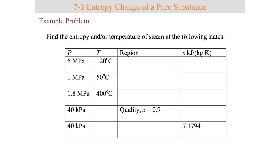As a quick example problem, you're welcome to pause the video and go ahead and find the entropy or temperature of steam at each of the following states. There are five different states, and you can use EES or your tables to get an idea of how to find entropy or use entropy to find different states.